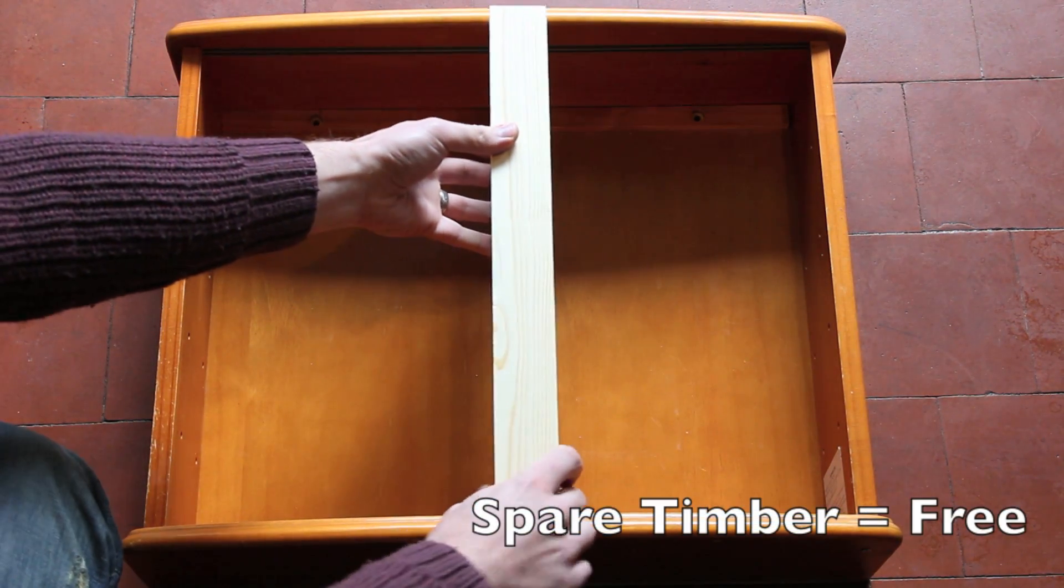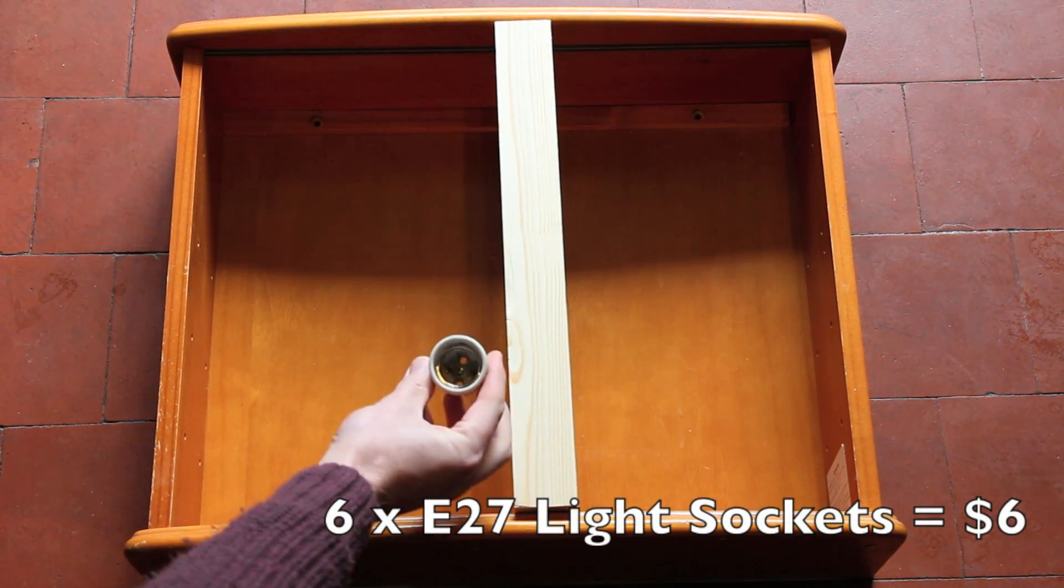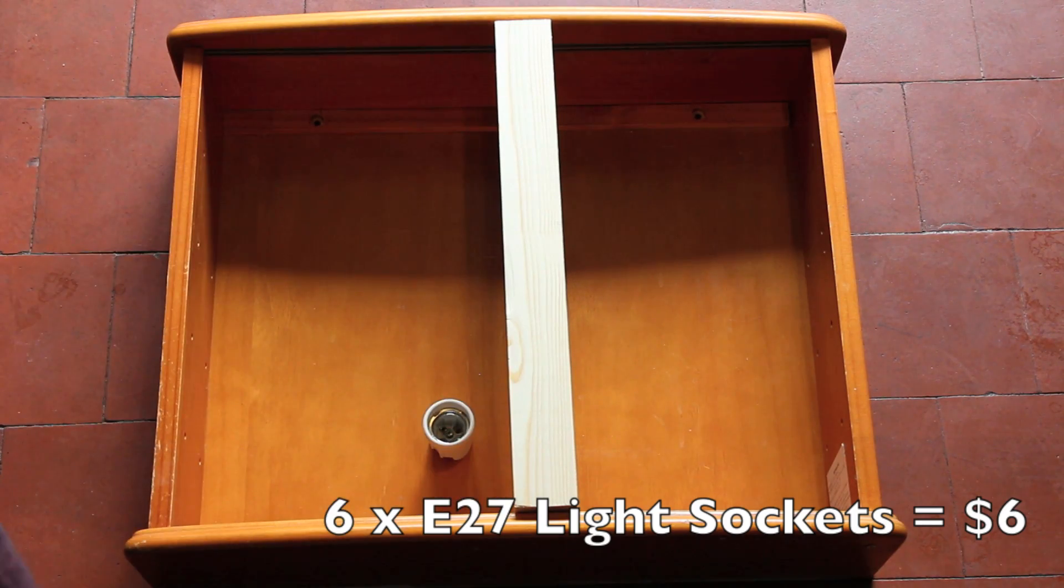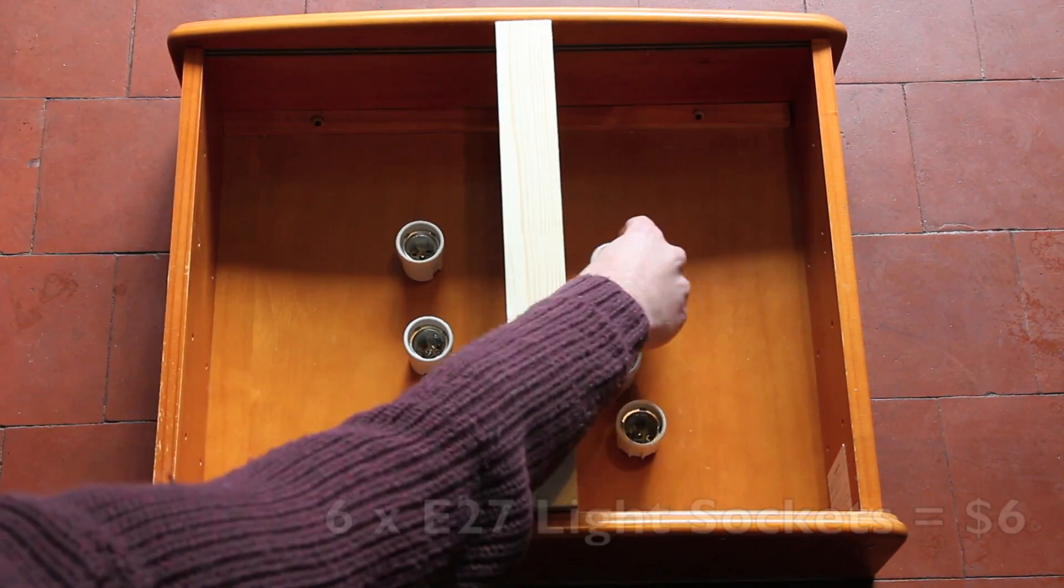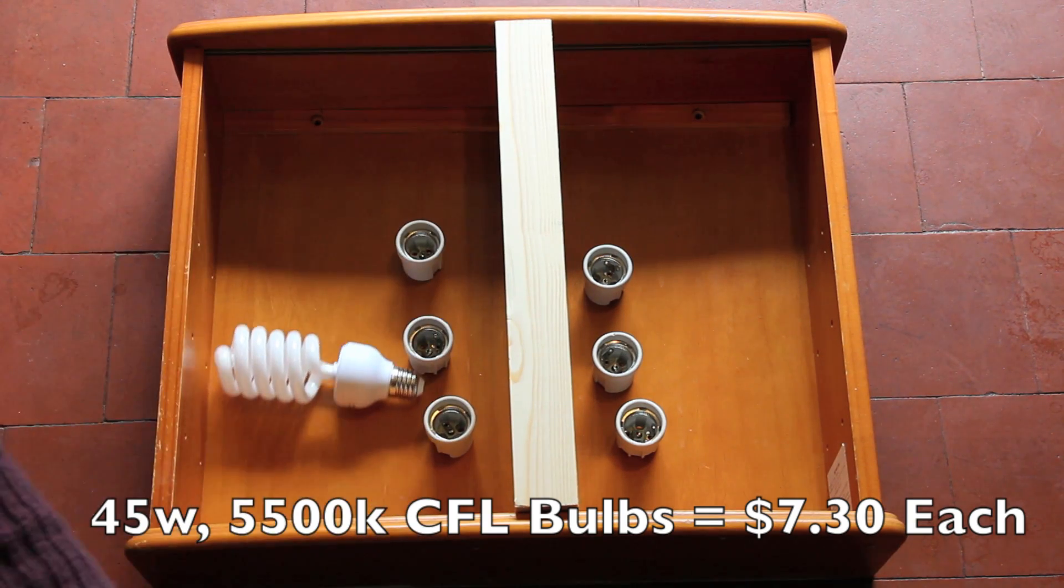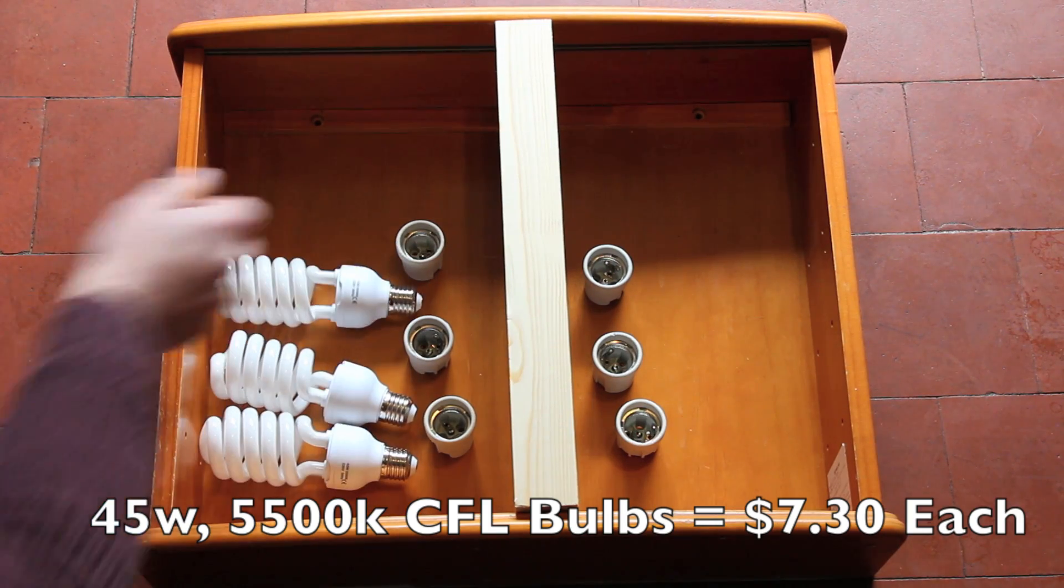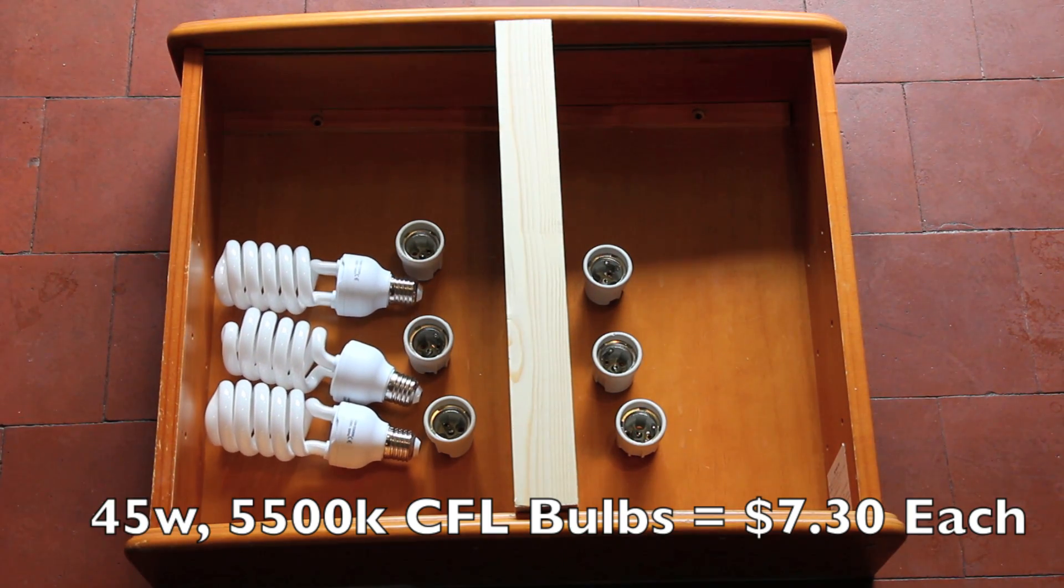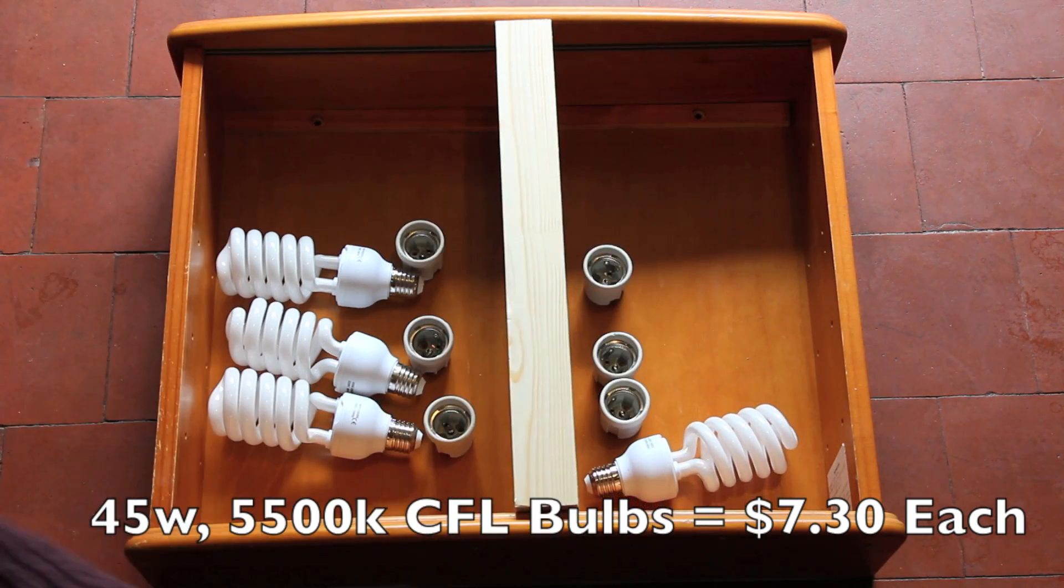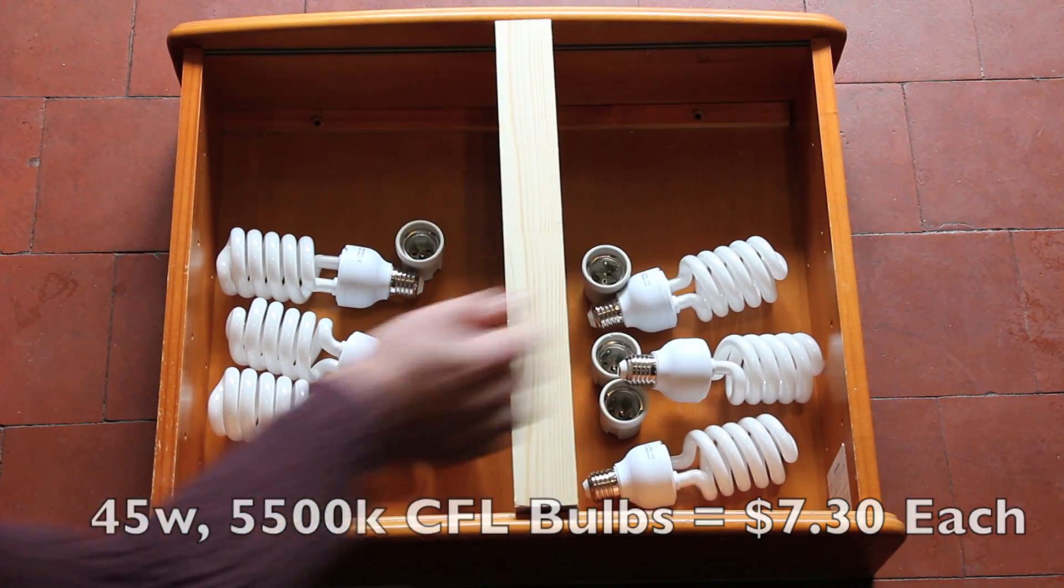I also have this piece of timber which will fit across in the center of the bathroom cabinet from top to bottom. Then I have these six E27 light sockets, really easy to get, they cost about a dollar each. Then I have six of these 45-watt, 5500 Kelvin compact fluorescent bulbs. I'm using 5500 Kelvin because it's a good middle ground between 6500 and 3500, and I'm using 45-watt bulbs because per watt they put out the most number of lumens, so we get the best efficiency.